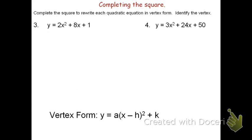Now let's take a look at some harder examples. Both of these have a value for a greater than 1. On problem 3, y equals 2x squared plus 8x plus 1. We'll begin by grouping the terms that have x's: the quantity 2x squared plus 8x, then plus 1. Because it's 2x squared, I'm going to factor out a 2. I get 2 times the quantity x squared plus 4x, since 2x squared divided by 2 is x squared and 8x divided by 2 is 4x.